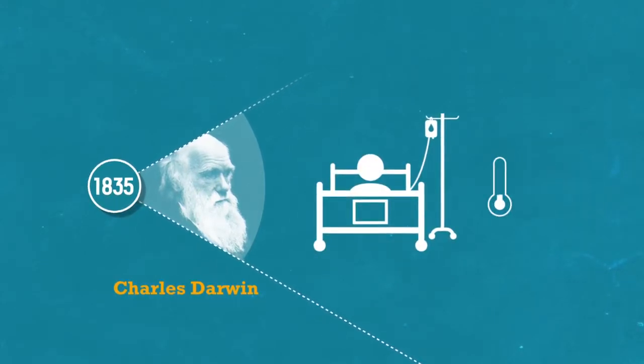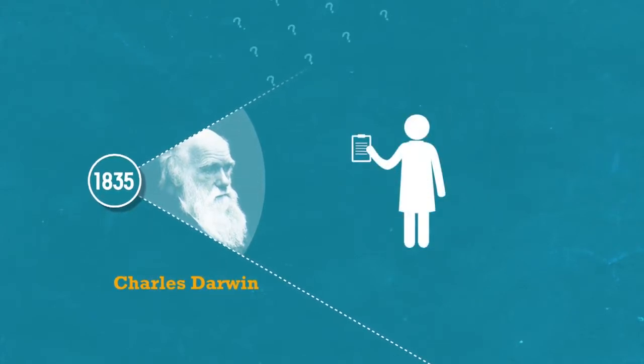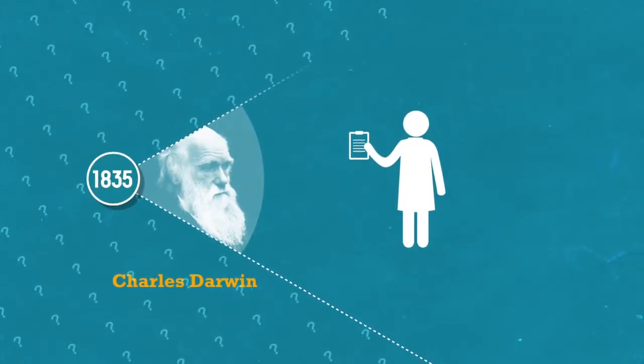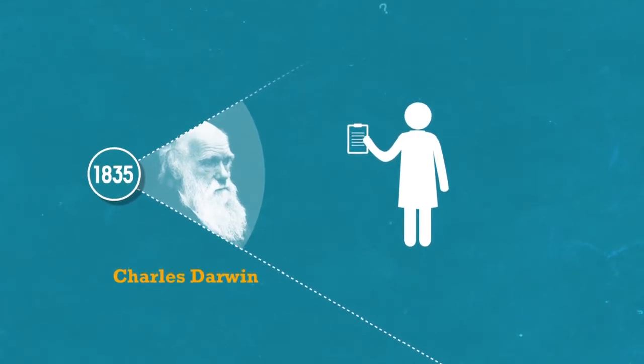One year later, Darwin returned to England and fell ill. Doctors were never able to diagnose the cause of the illness that would incapacitate him until the end of his life, but it is now largely suspected that he had Chagas disease.